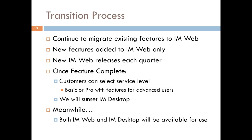We're planning releases each quarter with additional functionality. Once we're feature-complete — all features from IAM desktop migrated to IAM web — and we've gotten people through their transitions, our account management team will work with all of our customers on that. At that point, you'll be able to select your service level: basic, pro, or pro plus. We will then sunset IAM desktop, meaning it's no longer available or supported. In the meantime, both IAM web and IAM desktop are available.